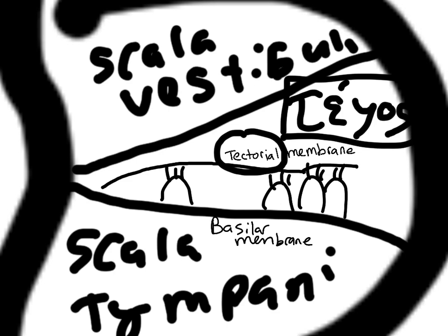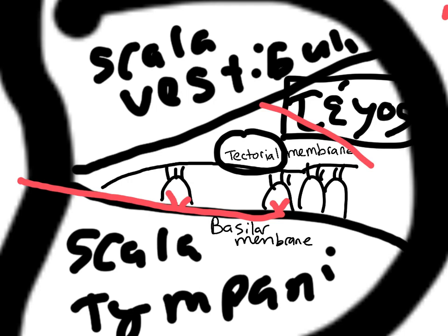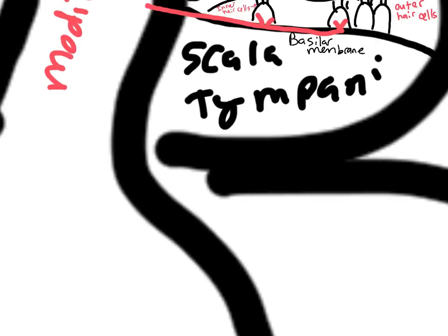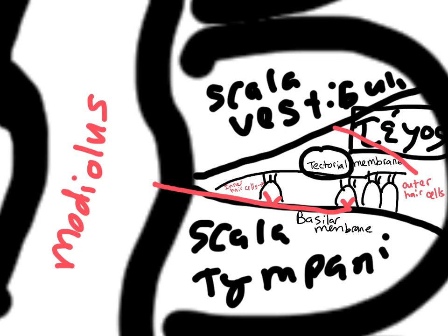The nerve that innervates each of these is going to travel into the bony structure in the center and travel out through the cochlear portion of the vestibulocochlear nerve. Just a few more things to make clear about naming: these outer hair cells are called outer hair cells, and the medial row is called inner hair cells. The bony structure in the middle is called the modiolus of the cochlea. And because this is the scala vestibuli, this membrane here is the vestibular membrane.